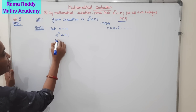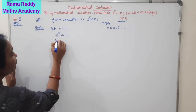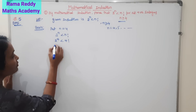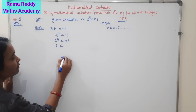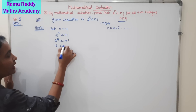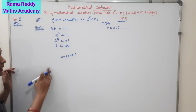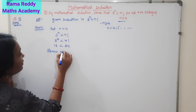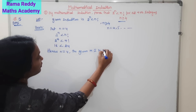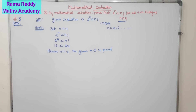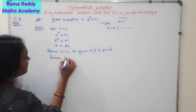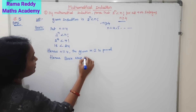For n equal to 4: 2 power 4 equals 16 (since 2→4→8→16), and 4 factorial equals 24 (since 4×3=12, 12×2=24). Therefore, 16 is always less than 24. Hence, for n equal to 4, the given mathematical induction statement is proved. Basis step is verified for n equal to 4.